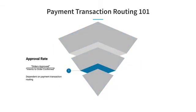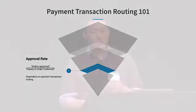What we really care about is the difference between step two and three. The number of orders confirmed over the number of orders approved is the approval rate, which is one of our true north metrics. Outside of the usual suspects of fraud and user error, the approval rate is greatly influenced by transaction routing. Transaction routing serves one purpose: to make sure that every valid transaction has the best chance of getting approved.